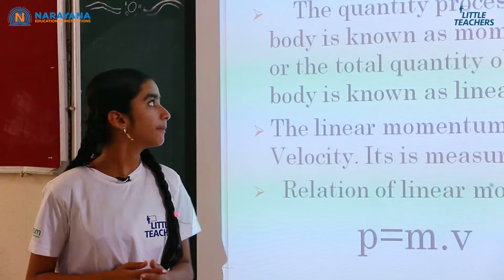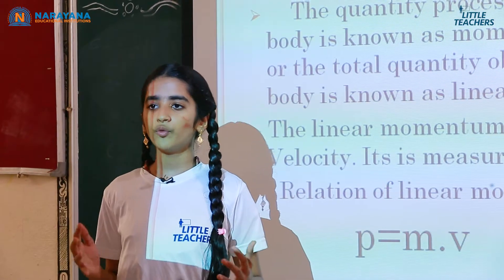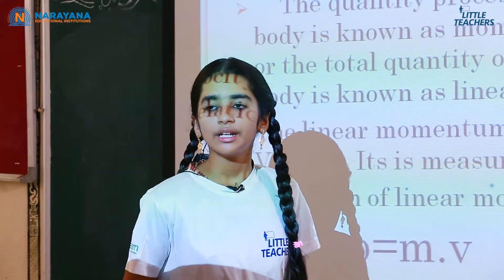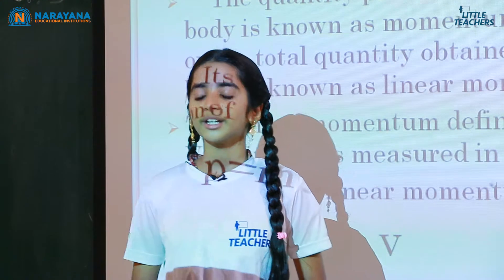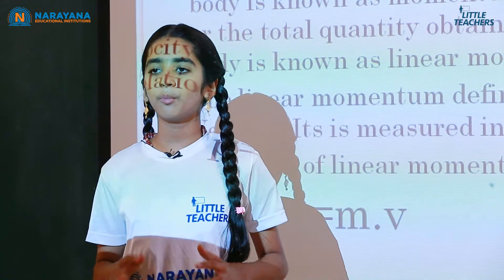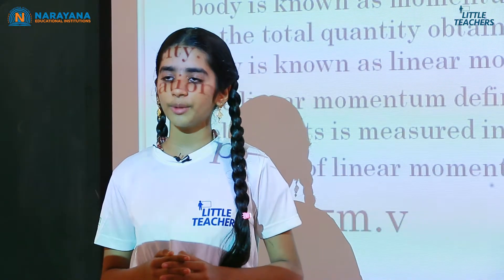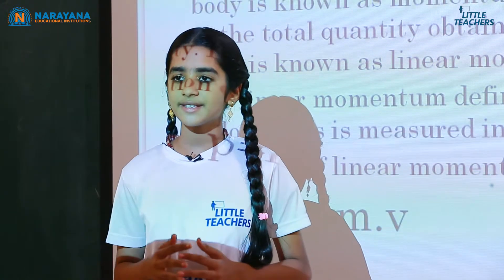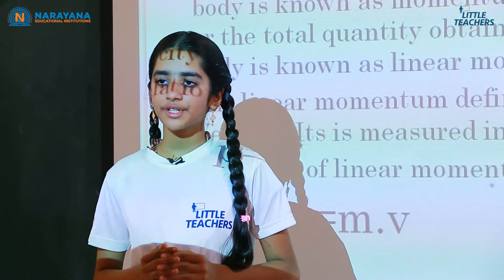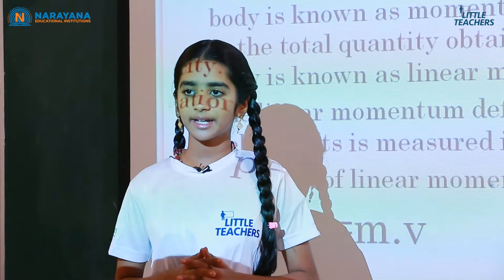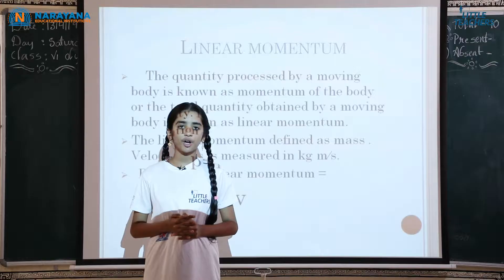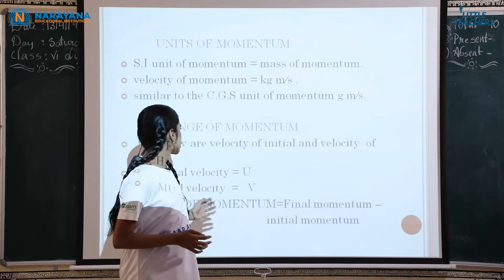Children, did you know about linear momentum? The quantity possessed by a moving body is known as momentum of the body. The linear momentum is defined as mass into velocity, which is measured in kg meter per second. The relation of linear momentum: P equals MV.